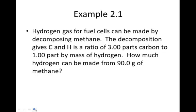So it says hydrogen gas for fuel cells can be made by decomposing methane. The decomposition gives carbon and hydrogen in a ratio of 3 parts carbon to 1 part by mass of hydrogen. How much hydrogen can be made from 90 grams of methane?